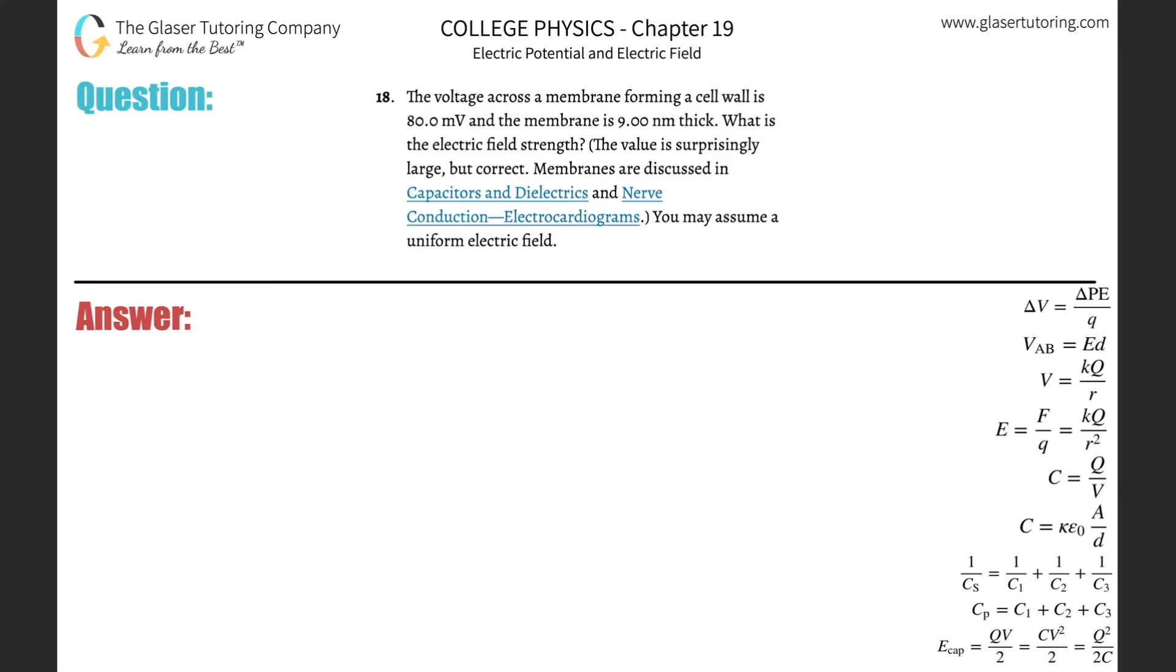Number 18, the voltage across a membrane forming a cell wall is 80 millivolts and the membrane is nine nanometers thick. What is the electric field strength?